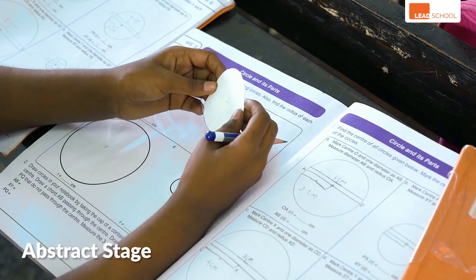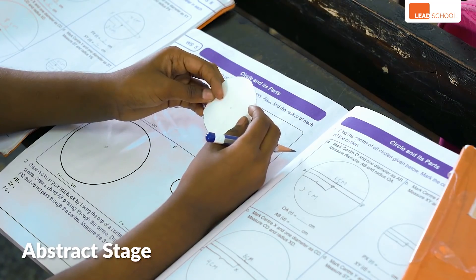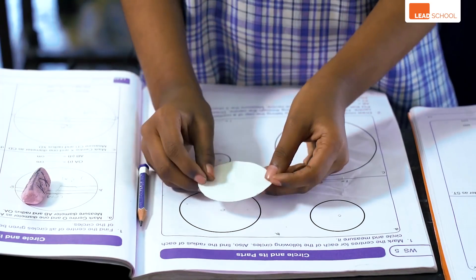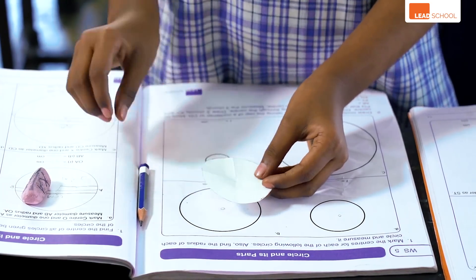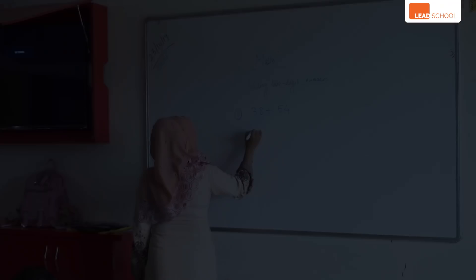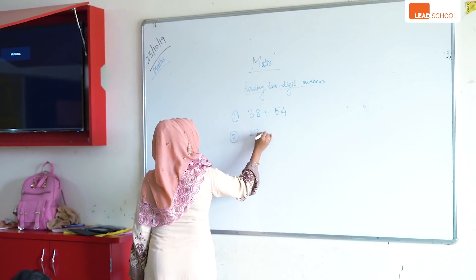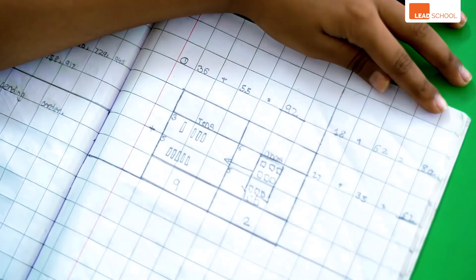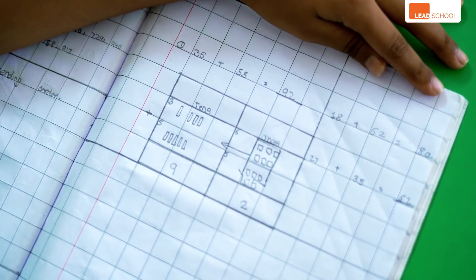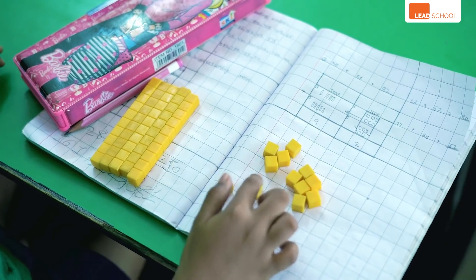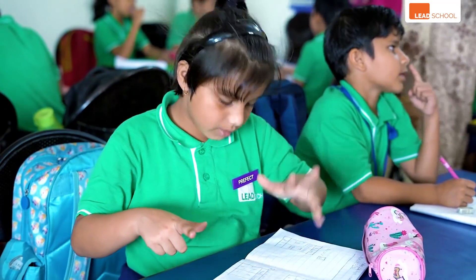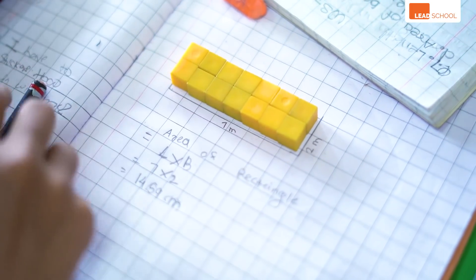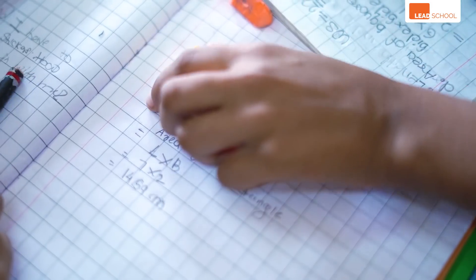Abstract is the final stage where students do math with symbols and numbers. In most schools, students learn math only at the abstract level. But following the Concrete Pictorial Abstract process helps them understand that the math symbols stand for actual quantities.